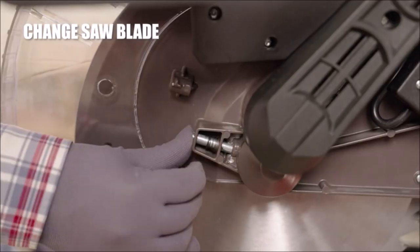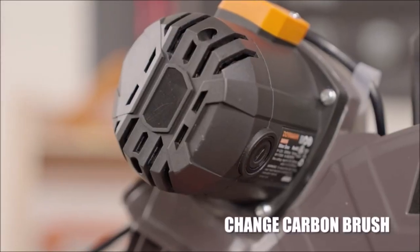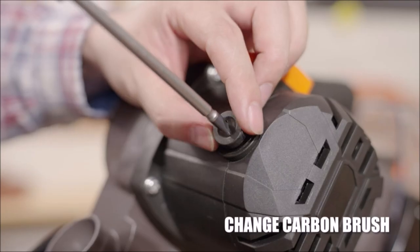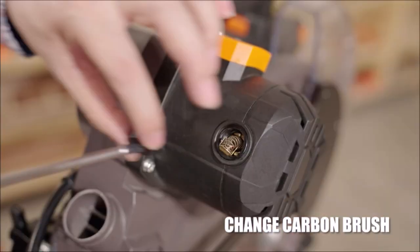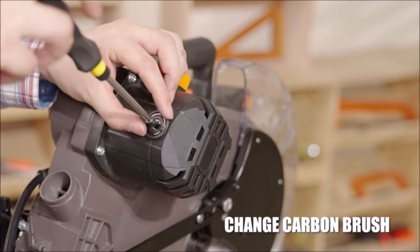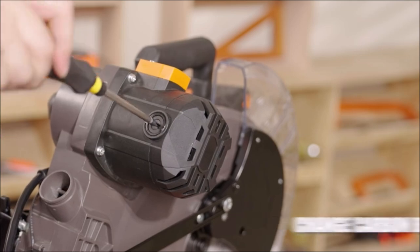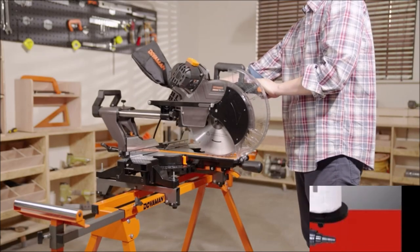With a maximum cutting capacity of 105 by 330 millimeters, the Doverman 12-inch Dual Bevel Compound Miter Saw is a reliable and efficient tool for woodworking enthusiasts and professionals, offering precision, power, and versatility in every use.